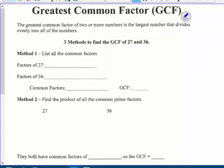Greatest common factor. This can be found in the sixth grade text, Chapter 1, Section 3 if you need some extra help with this. The greatest common factor of two or more numbers is the largest number that divides evenly into all of the numbers.